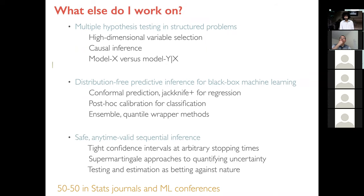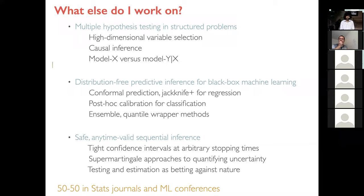Another area is what I call safe anytime-valid sequential inference. We're trying to get tight confidence intervals for things we're estimating at arbitrary stopping times. We've been designing new super-martingale-based approaches to quantifying uncertainty, viewing testing and estimation as basically betting against nature.